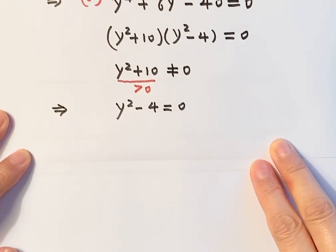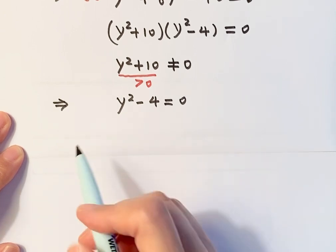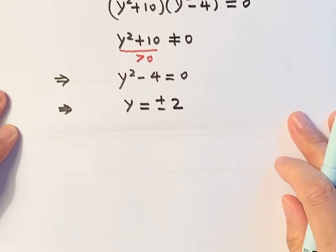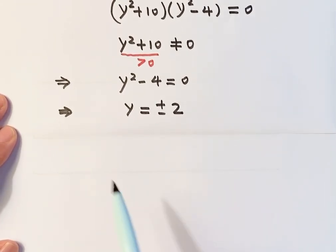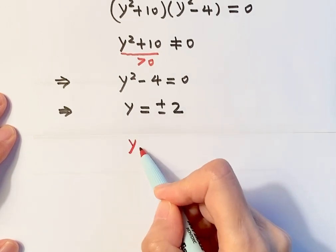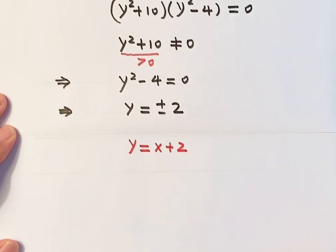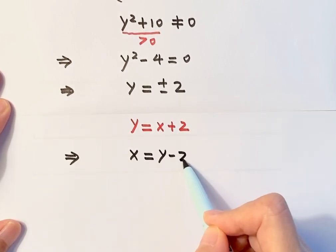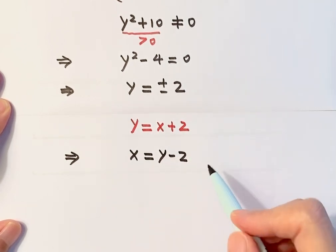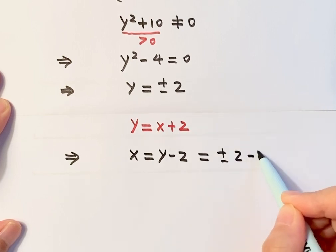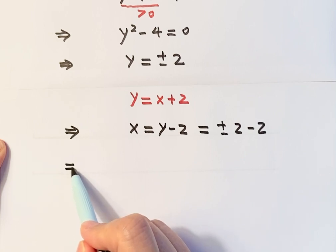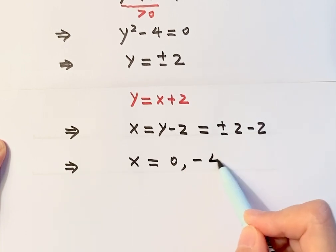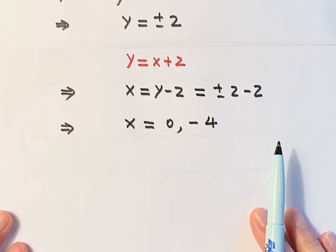Solving y² - 4 = 0: move 4 to the other side and take the square root, giving y = ±2. But we want solutions for x. Remember, we set y = x+2, so x = y - 2. Plugging in y = +2: x = 2 - 2 = 0. Plugging in y = -2: x = -2 - 2 = -4. So the solutions are x = 0 and x = -4.